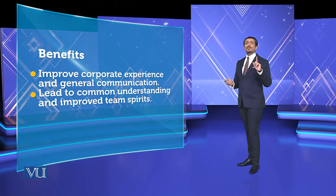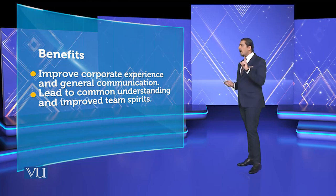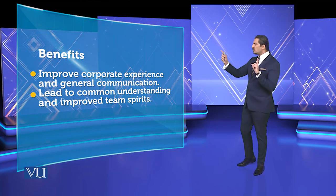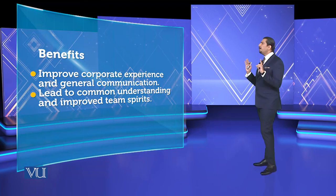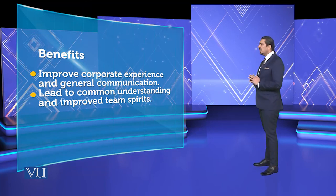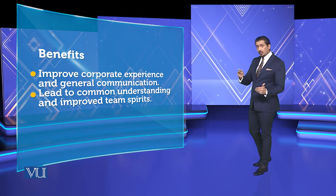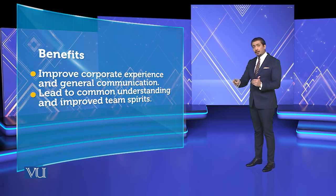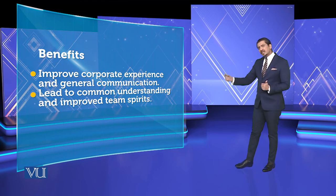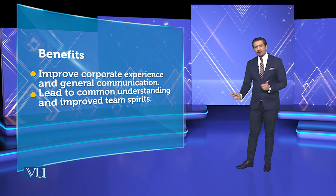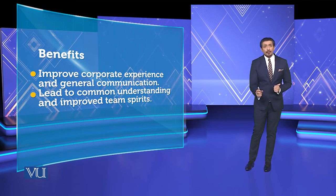For risk management, the important word is rectification — now how can we rectify? Let's take the benefits: it improves corporate experience and general communication, leads to common understanding, and improves team spirit. As I mentioned, bring the team together, identify where the problem is occurring — whether it's a basic problem, significant problem, moderate problem, or major problem. How can you avoid the problem? Team spirit is crucial — deciding what to avoid, what is unavoidable, what is moderate.